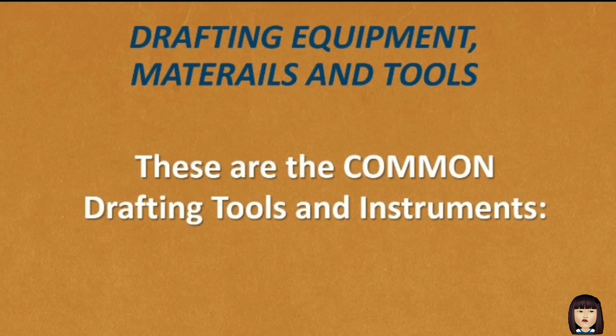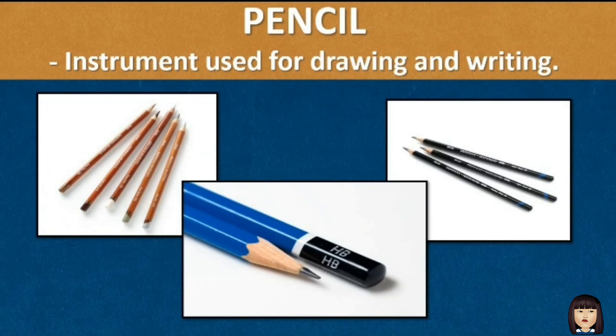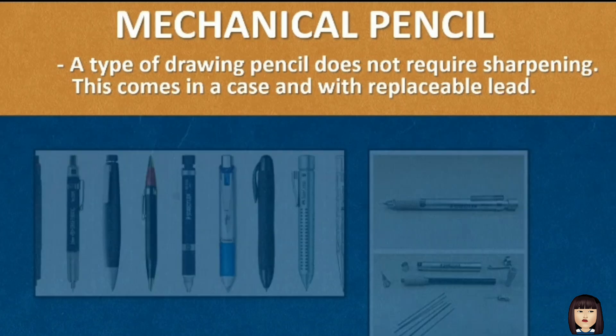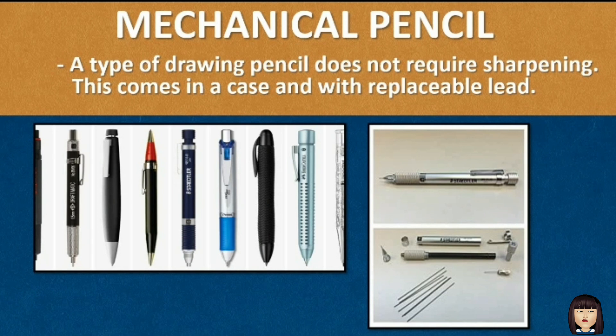Let's now proceed to the common tools and instruments used by a draftsman. The pencil is an instrument used for drawing and writing. One type of pencil used by a draftsman is the mechanical pencil — a type of drawing pencil that does not require sharpening. This comes in a case and with replaceable lead.